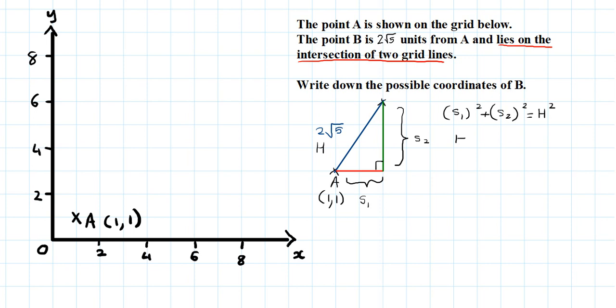So when I square the hypotenuse, that becomes 2 root 5 squared. 2 squared is 4, root 5 squared is 5, 4 times 5 is 20.